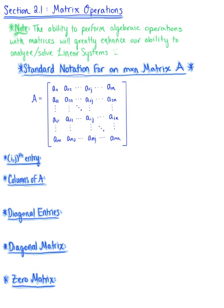So to begin, I want to do just a little general review of the standard notation for an m by n matrix A, as well as to establish some new vocabulary. In particular,